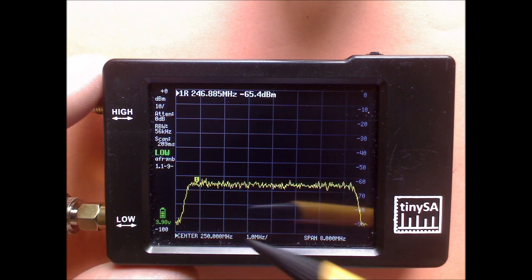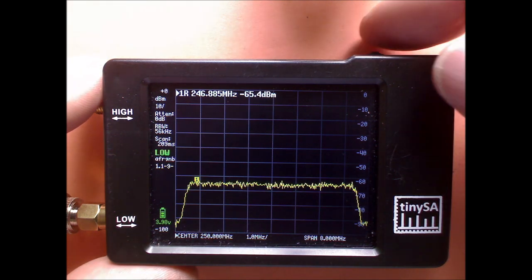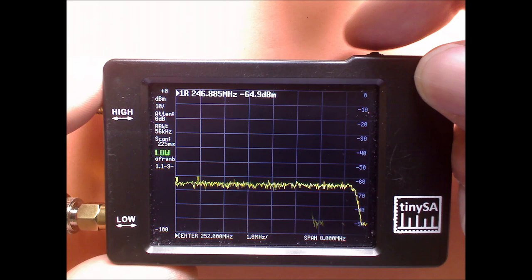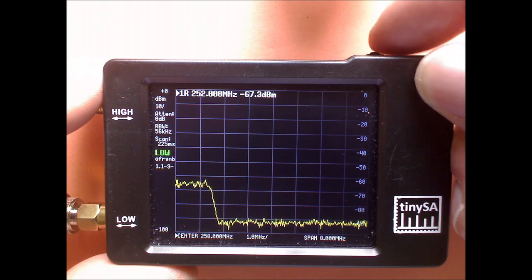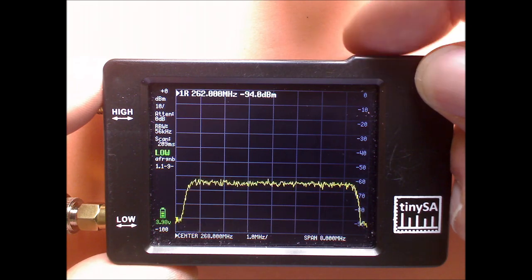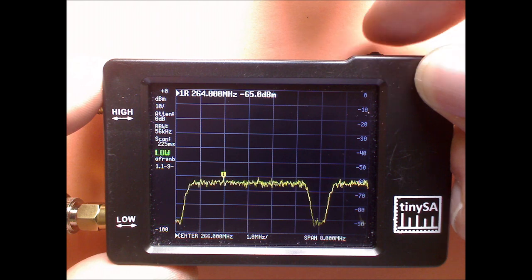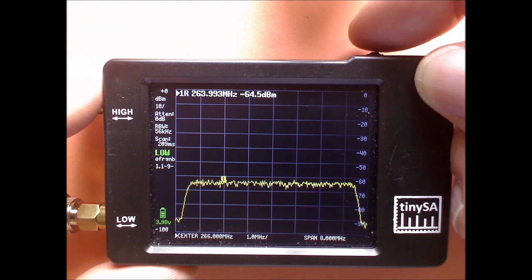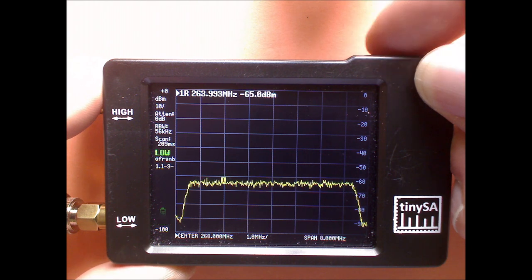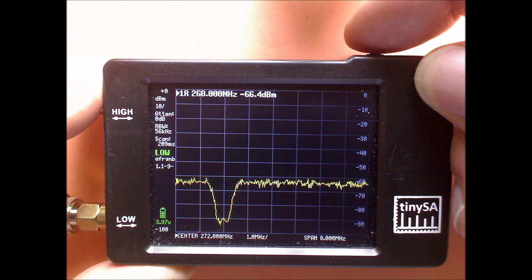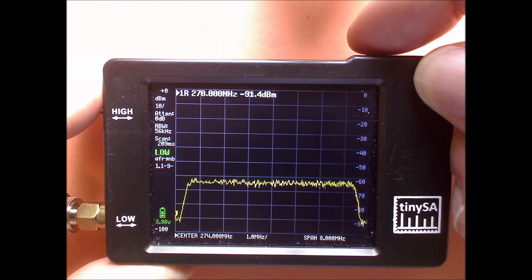Now, what we can do is we can click on the center and we can use the jog button to step through the frequencies. Here we have the next channel. And you can see there's a nice deep gap between the channels.